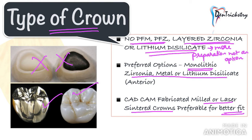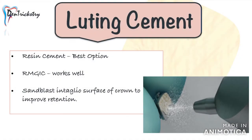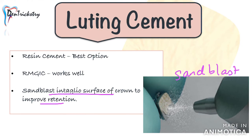Coming to the choice of luting cement: before cementation of a metal or zirconia crown, you can sandblast the internal surface of the crown with 50-micron aluminum oxide particles — just instruct your lab technician to do it before delivering the prosthesis. Among luting cements, resin-modified GIC or a resin cement should be used, as these have proven to work very well in such cases. Please go for a very good brand like GC or 3M, because that also makes a lot of difference in my experience.